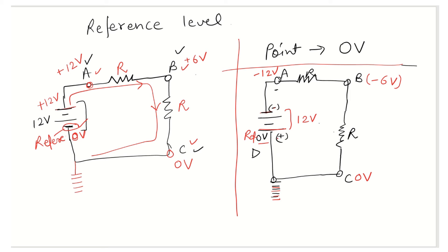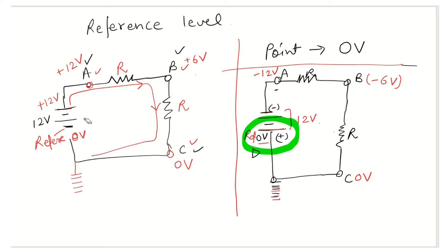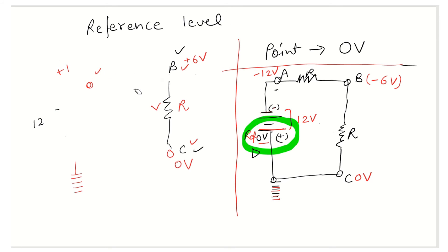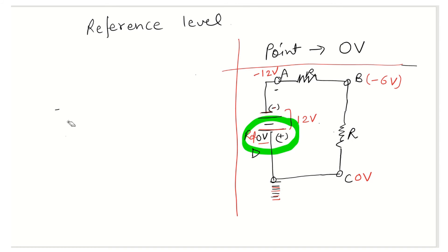We will consider one more example. In these two examples, we have taken the negative side and positive side as reference and calculated the voltage at different points of the circuit. Now let us move to another example in which we will not take the reference level as the positive or negative side of the battery — we will take any midpoint of the circuit as the reference level.